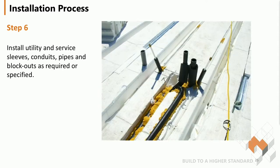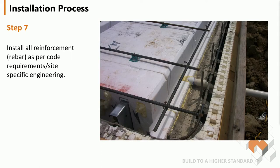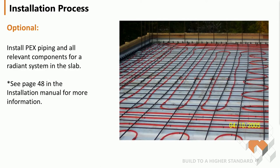Install all the piping needed for the floor and floors above. Any sleeving for plumbing, services, and block-outs for mechanical will be installed now as well. Install all the rebar as per the structural design. If you're going to put in in-floor heating, put down your wire mesh and zip-tie the piping to the wire mesh before you pour.